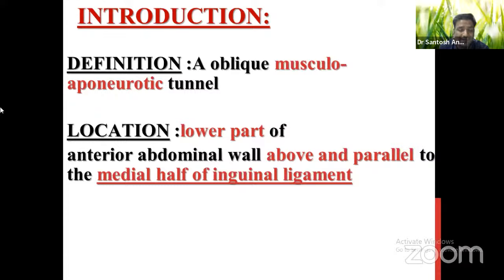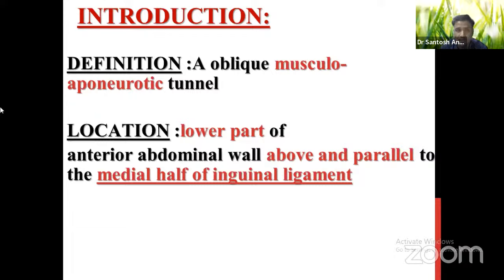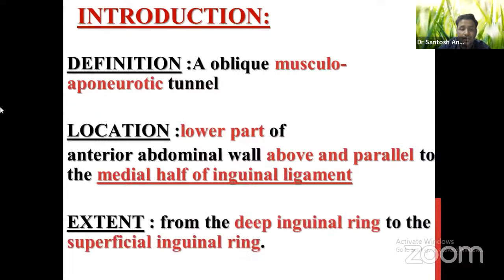As you already know, there are eight layers in the anterior abdominal wall: skin, superficial fascia, external oblique, internal oblique, transabdominus, fascia transversalis, extraperitoneal tissue, and parietal peritoneum. The inguinal canal is present in the lower part of the anterior abdominal wall, above and parallel to the middle half of the inguinal ligament.